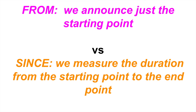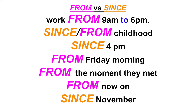Here are the answers: 'work from 9 a.m. to 6 p.m.' — I show you the starting point 9 a.m. with 'from'. 'Since' or 'from childhood' — in this situation two variants are possible depending on what you want to indicate. If you want to highlight just a starting position, use 'from childhood'. If you want to show the duration, like 'I've been studying languages since my childhood and I still do that', you use 'since'.